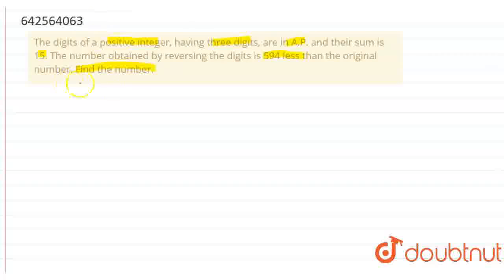The number obtained by reversing the digits is 594 less than the original number. Now, find the number. It's given the 3 digits positive integer are in AP. So let's suppose in the one's place it is A minus D, in the ten's place A, and in the hundred's place A plus D.